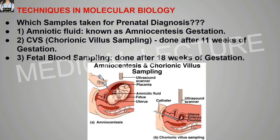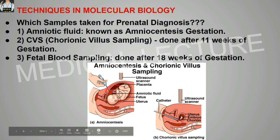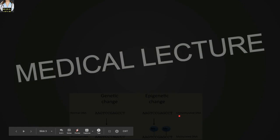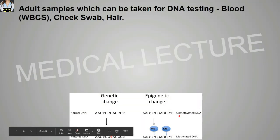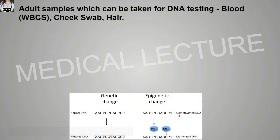This is the figure of the amniocentesis, and this is the figure of the chorionic villus sampling. Adult samples which can be taken for DNA testing are blood samples, basically WBCs, cheek swab, or hair.